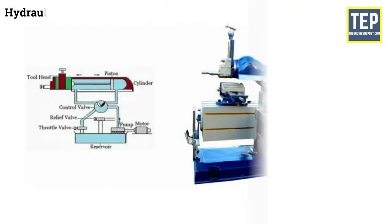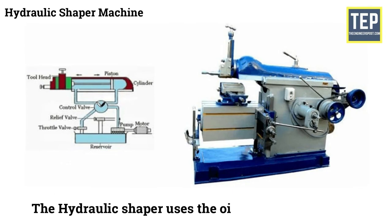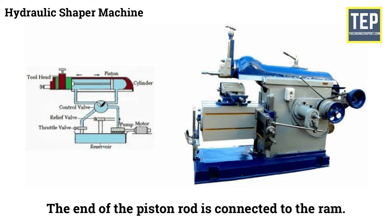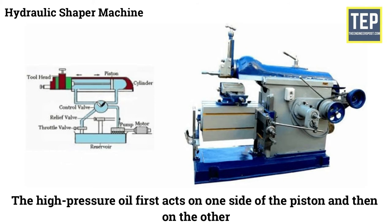Hydraulic Shaper Machine: In these types of Shaper Machines the reciprocating motion of the RAM is provided by the hydraulic mechanism. The hydraulic shaper uses the oil under high pressure. The end of the piston rod is connected to the RAM. The high pressure oil first acts on one side of the piston and then on the other.